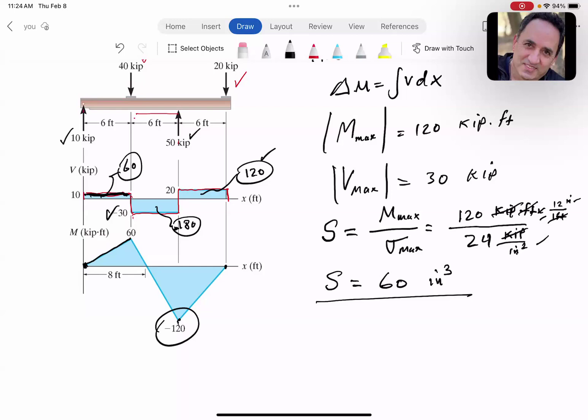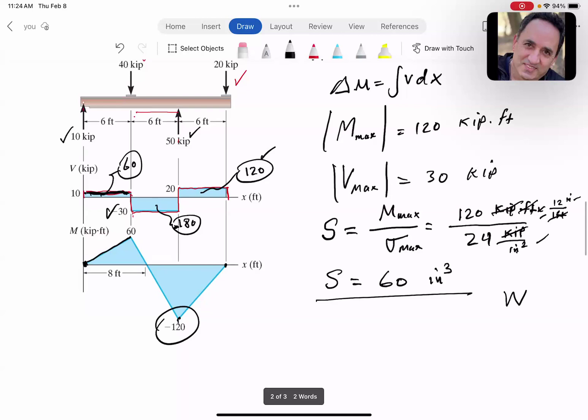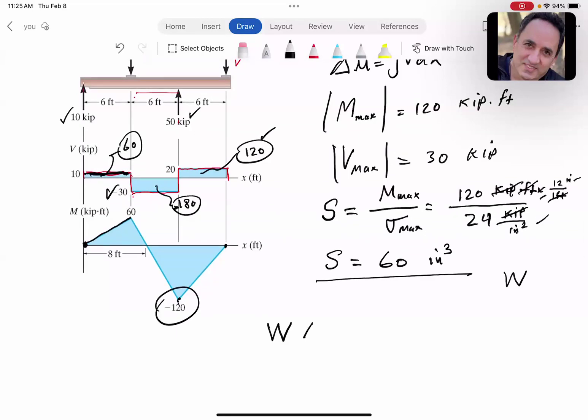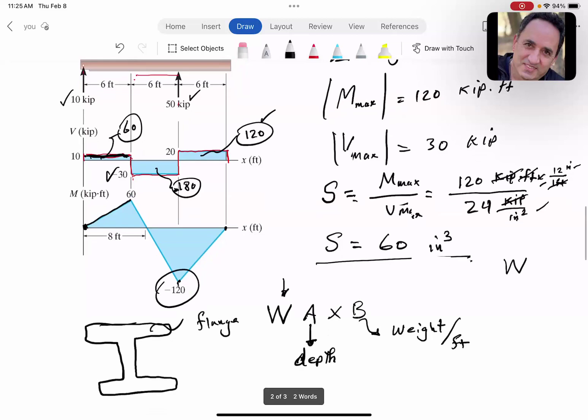Go look in the table for section modulus of wide flange W-shaped beams that are at least 60. You should always pick larger. Let me talk about W beams. W A times B: W means wide flange (the flanges are wide), A is the approximate depth (rounded, not exact), and B is the weight per linear foot in pounds per foot. Let's go to the table. We're looking for a section modulus of 60.